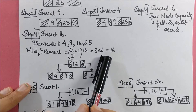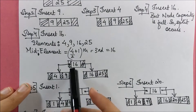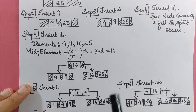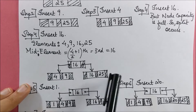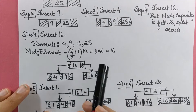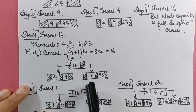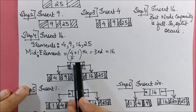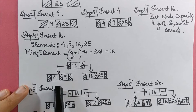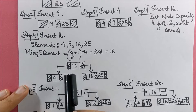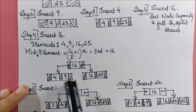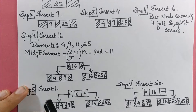So 16 becomes the parent. The left child contains 4 and 9, and the right child contains 16 and 25. In B+ trees, all leaf nodes must provide the complete list of elements, so 16 is retained in the leaf as well — it belongs on the right side since elements there can be greater than or equal to 16. Next element to insert is 1.